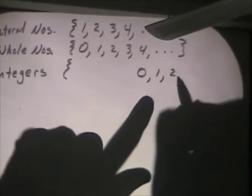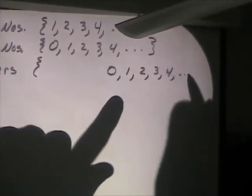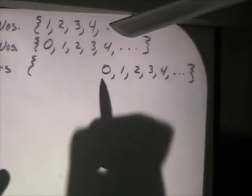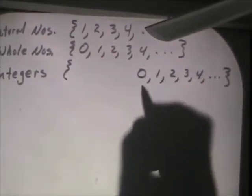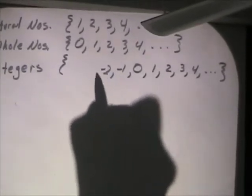In the set of integers, zero is in the middle. That means you have no money but you're not in debt. Positive one. We have positive integers that go off in this direction forever.